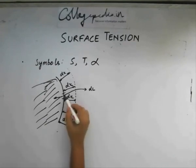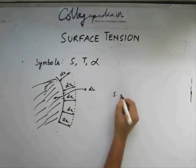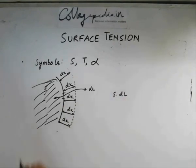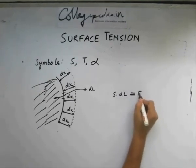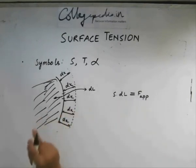So if the liquid is applying a force in this direction, the molecules at the surface are applying a force in this direction, that force will be s times dl, what we found out initially. And this must be equal to the force which is applied externally to balance the effect of the surface tension.